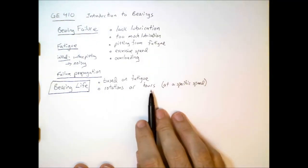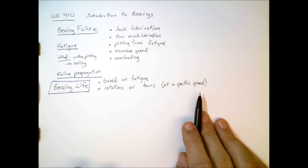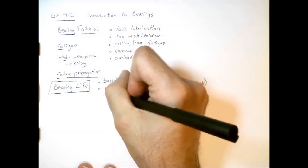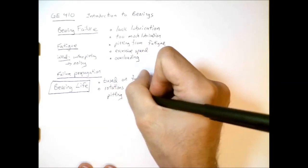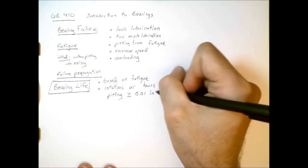The number of rotations, or number of hours a bearing can go before the first evidence of fatigue. And the way we quantify this first evidence of fatigue is if we see pitting with a surface area greater than one one-hundredth of a square inch.